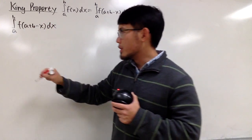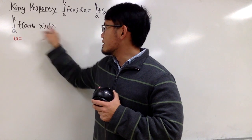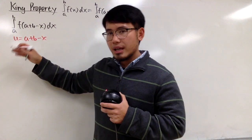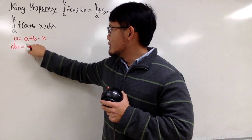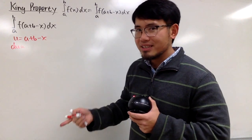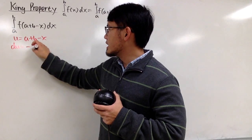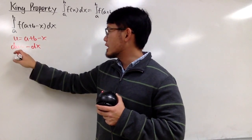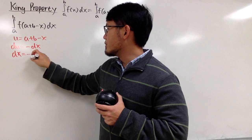Let u equal the inside: a plus b minus x. Differentiating both sides, du equals zero plus zero — because a and b are constants — plus the derivative of negative x, which gives negative dx. Dividing both sides by negative one, dx equals negative du.